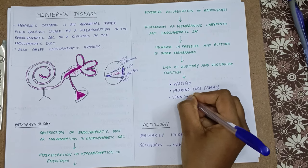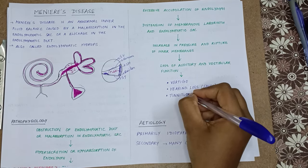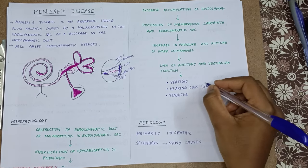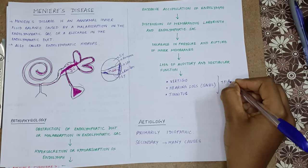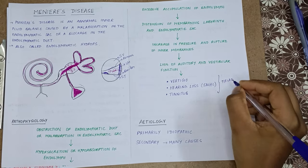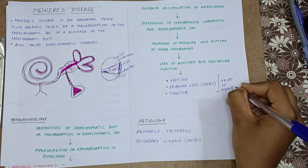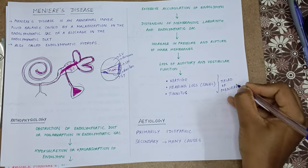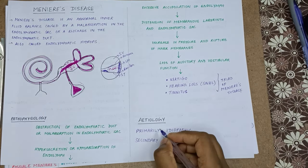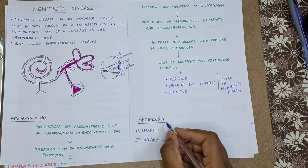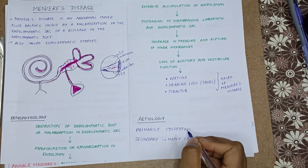These are the triad of Meniere's disease. Now the etiology of Meniere's disease — etiology means the causes. Primarily it is idiopathic, unknown. Secondarily it has many causes.